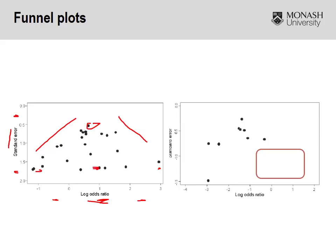This type of systematic review would identify that publication bias is an issue. It may also highlight that the search was inadequate — studies may be out there but our search isn't picking them up. So from a number of viewpoints, funnel plots are really powerful in terms of identifying whether or not publication bias is a factor in your systematic review.